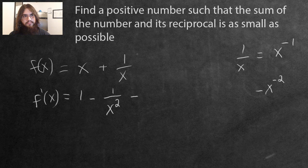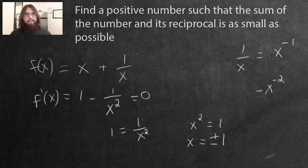So if we did that, we can have 1 equals 1 over x squared. Then we multiply x squared by everything, and we're just going to have x² = 1. We take the square root, and we'll have x equals plus or minus 1. So which number is the number we're looking for?